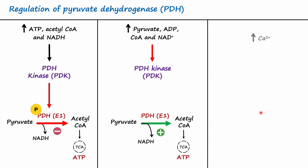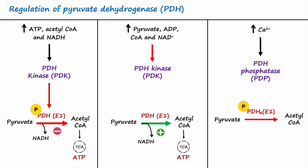A third scenario: increased calcium levels can also regulate pyruvate dehydrogenase enzyme. Increasing calcium in cells activates an enzyme called pyruvate dehydrogenase phosphatase. Unlike kinases that add phosphate groups, phosphatase enzymes remove phosphate groups from enzymes. Pyruvate dehydrogenase phosphatase activates pyruvate dehydrogenase by removing the phosphate group from it. When pyruvate dehydrogenase is not phosphorylated, it is considered active, and the reaction of pyruvate to acetyl-CoA is activated.